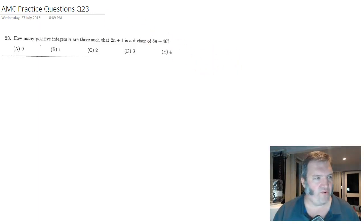All right, last one for tonight. Question 23. How many positive integers n are there such that 2n plus 1 is a divisor, goes into without leaving a remainder, 8n plus 46?